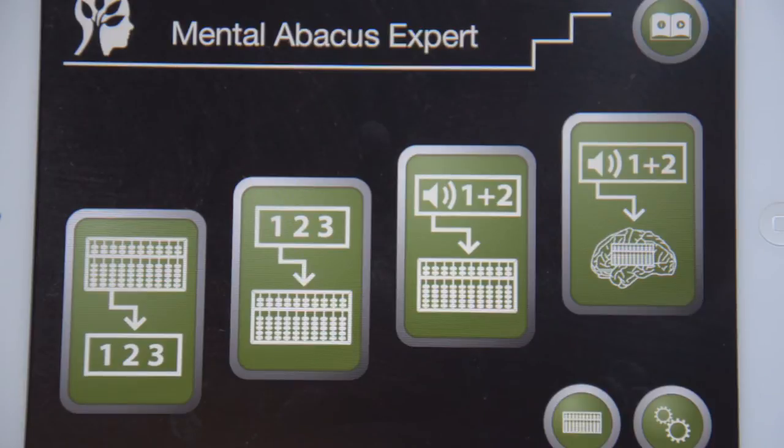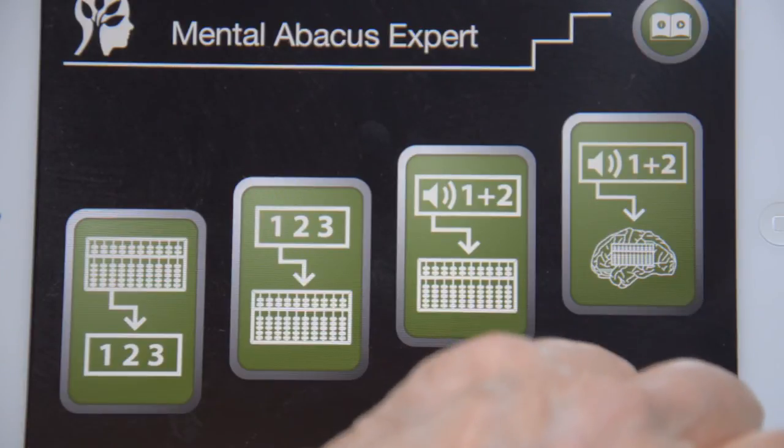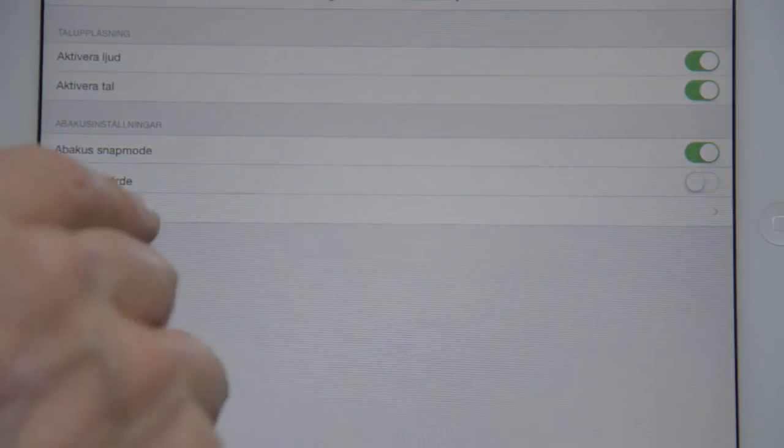In the settings you can choose abacus type. Classical 5 plus 2 or modern 4 plus 1. If you are new to abacus I recommend the classical 5 plus 2.